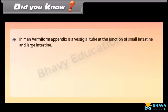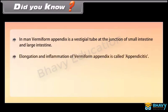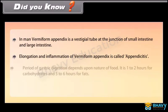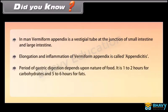Did you know? In man, the vermiform appendix is a vestigial tube at the junction of the small intestine and large intestine. Elongation and inflammation of the vermiform appendix is called appendicitis. The period of gastric digestion depends upon the nature of food — it is one to two hours for carbohydrates and five to six hours for fats.